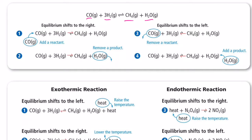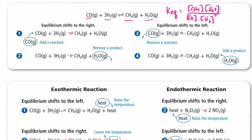Let's first write the equilibrium expression for this reaction. Keq would be equal to methane CH₄ concentration on top and water vapor, and we would have carbon monoxide and hydrogen gas — H₂ cubed — on the bottom.